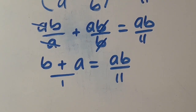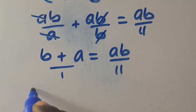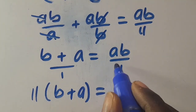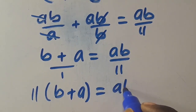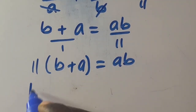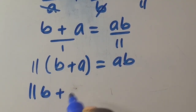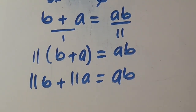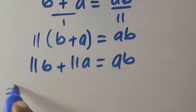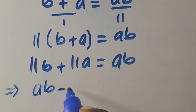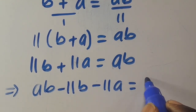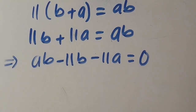Cross multiplying gives 11(b + a) = ab, which expands to 11b + 11a = ab. Taking everything to one side: ab - 11b - 11a = 0.